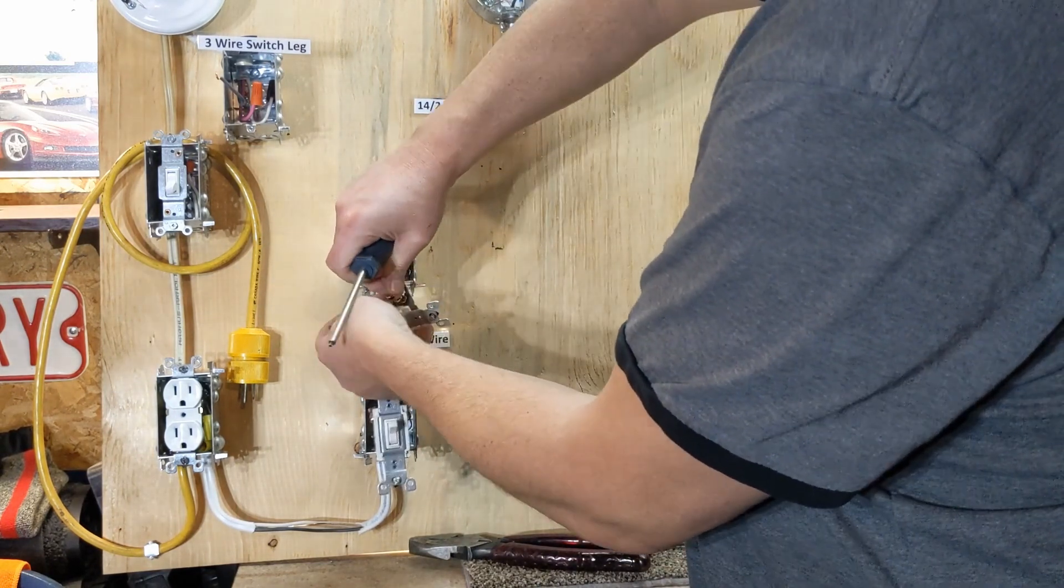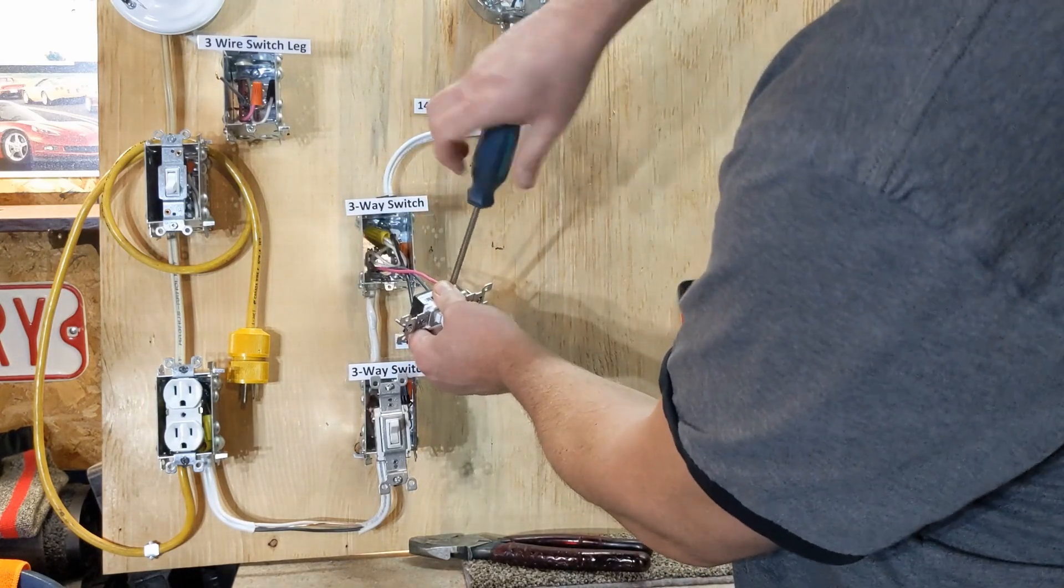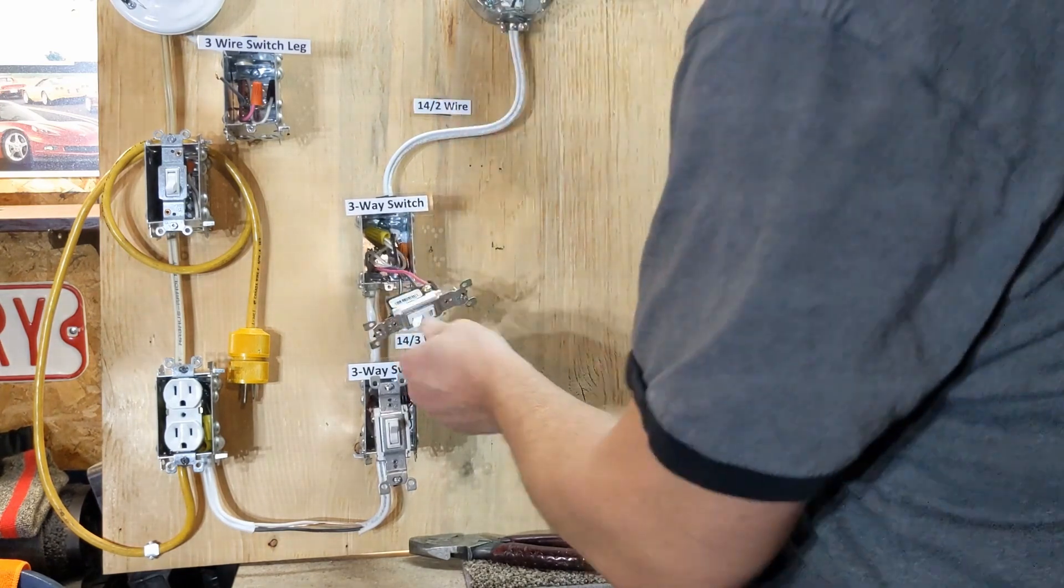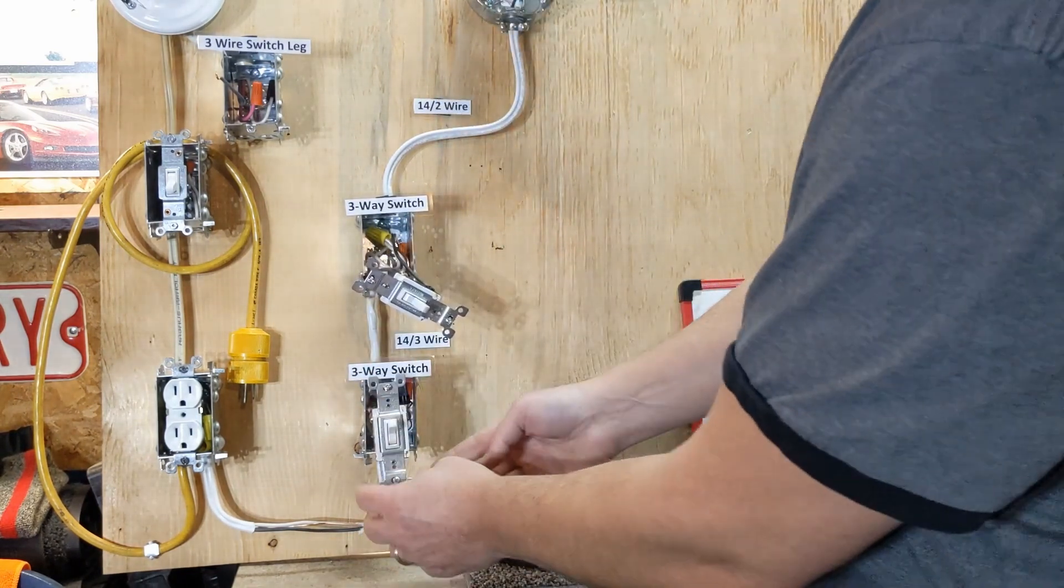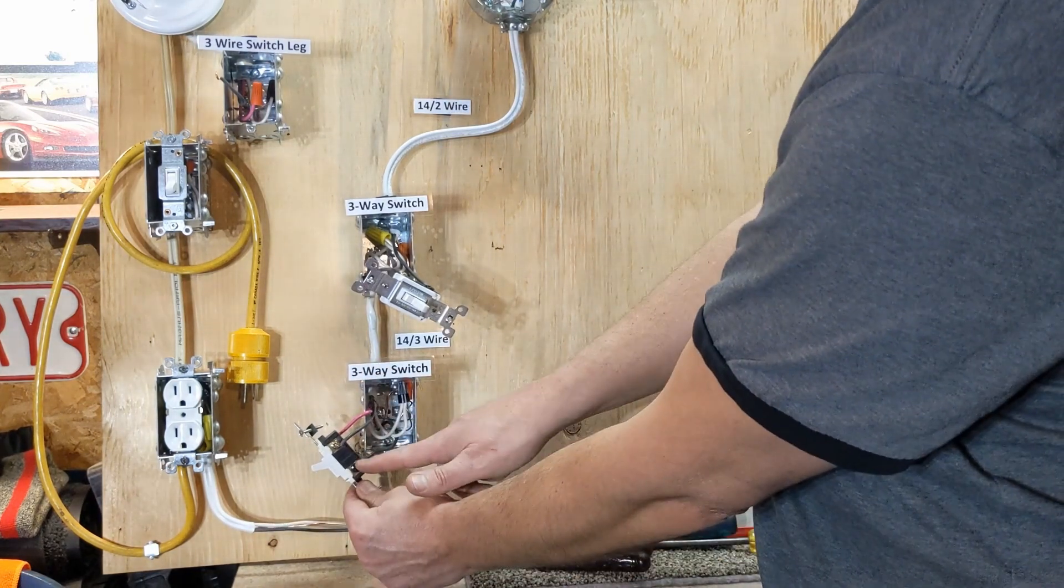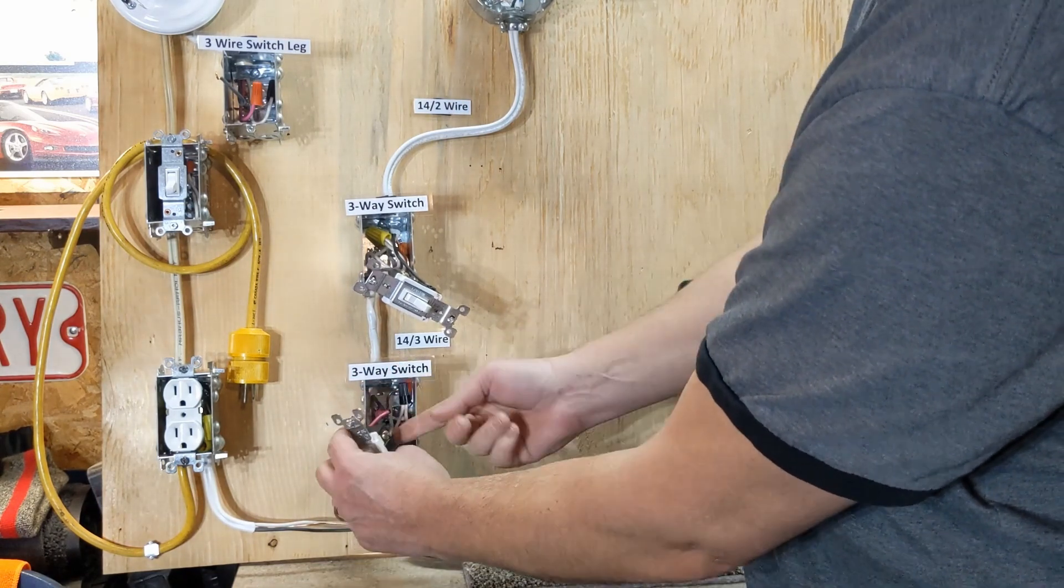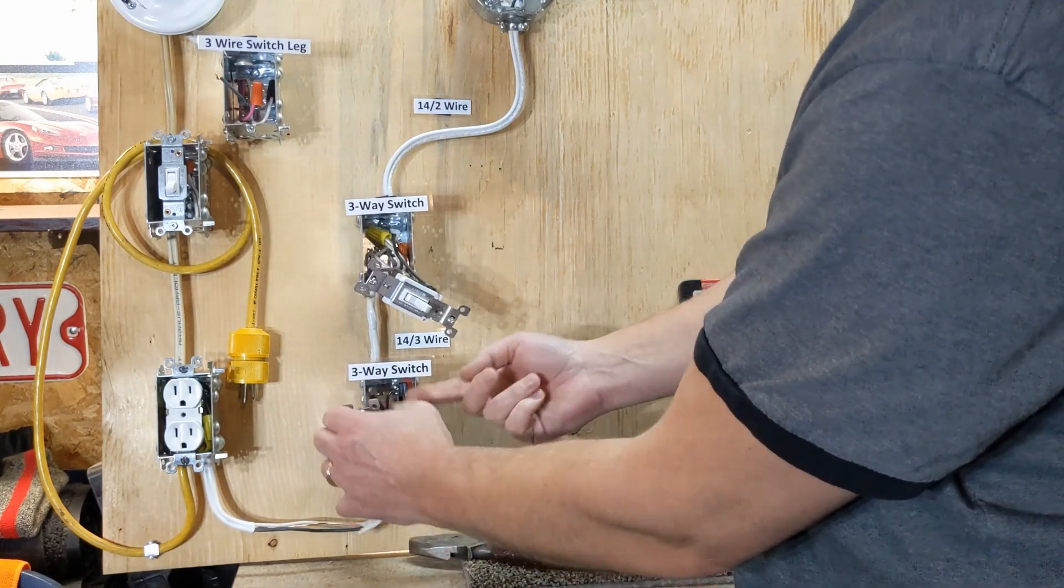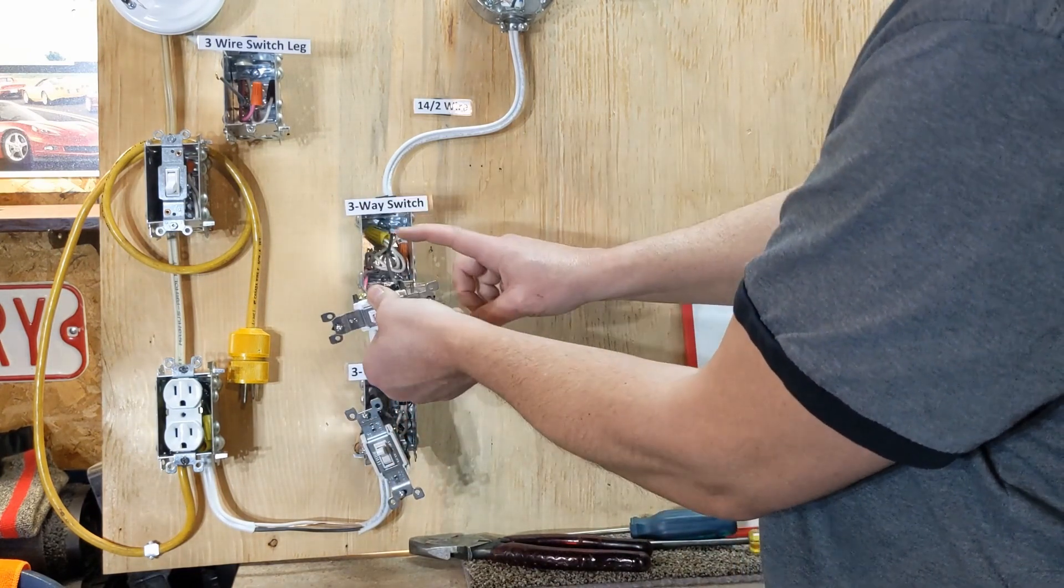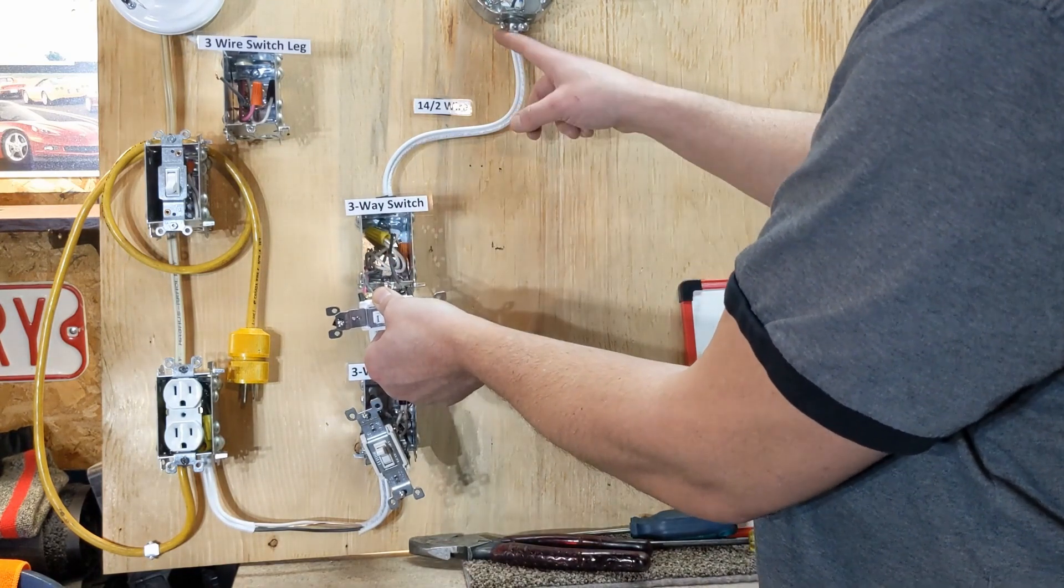One more, I'll show you what we did here and go over it one quick time and then I'll put it all together and see it in practice. So again, power coming in goes to our bottom screw. Our two travelers are the red and black coming up. Red and black on the other end go in as travelers, and then our hot leaving goes up to our light.